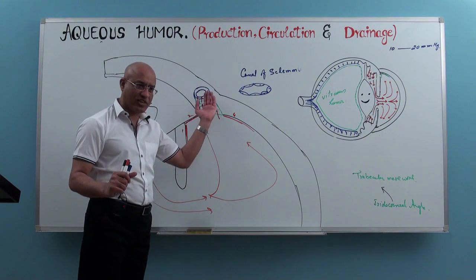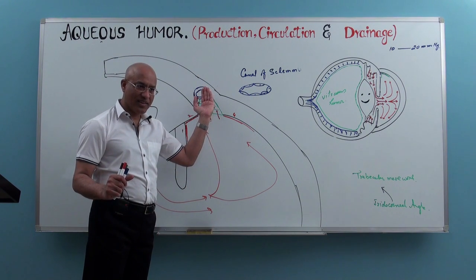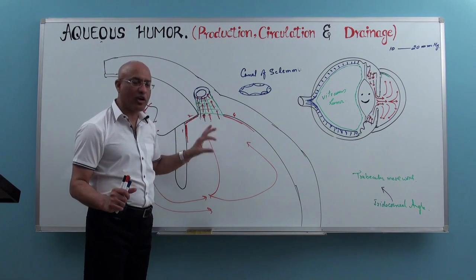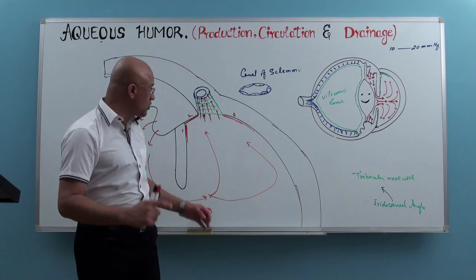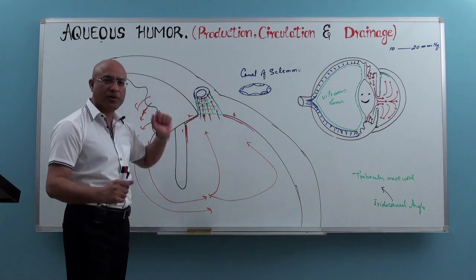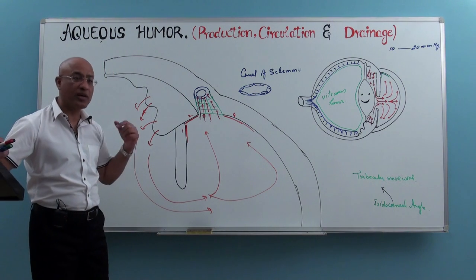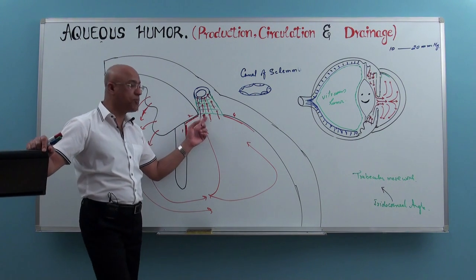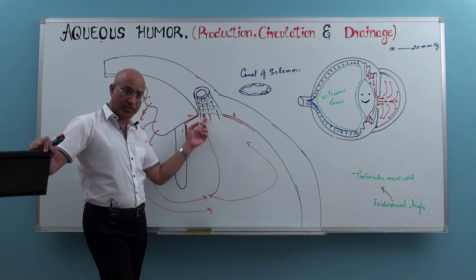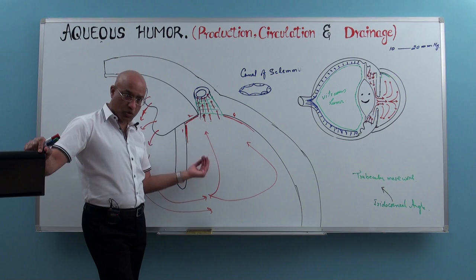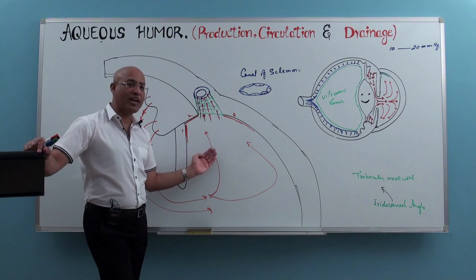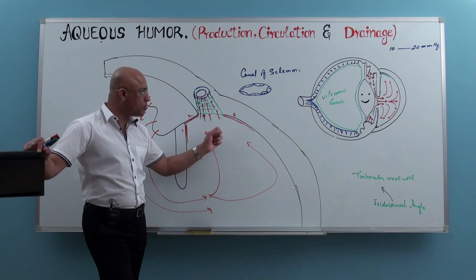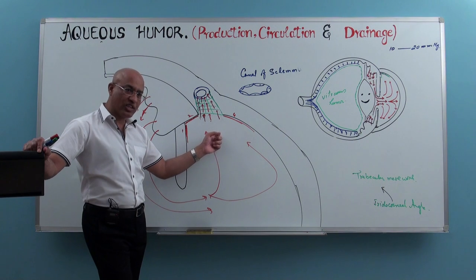The trabecular meshwork offers resistance — even though it is permeable to aqueous humor, to some extent it offers physiological resistance, normal functional resistance to the aqueous humor drainage. That resistance to this outflow contributes to the normal intraocular pressure.